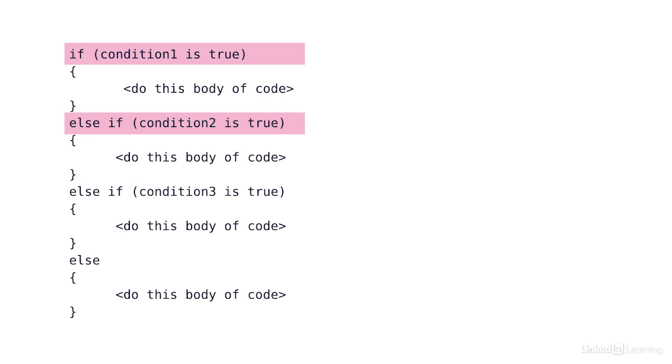If condition two is false, it will go down and test condition three. If condition three is true, it will execute the body of code under condition three and exit out of the structure. You can only find one true condition per if-else-if structure. So even if multiple conditions are true, it can only execute one — it will pick the first one it finds and exit out.